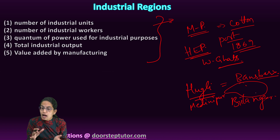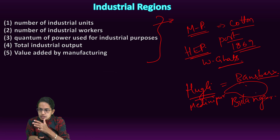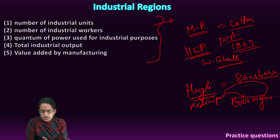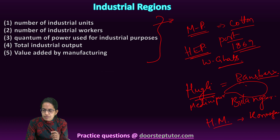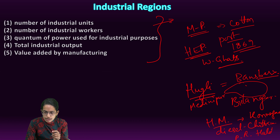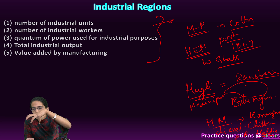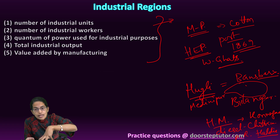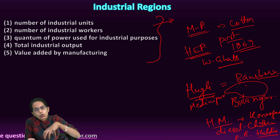This region also had ample opportunity of cheap labor coming from Bihar, Odisha, and Eastern Uttar Pradesh. Factories established here include Hindustan Motors Limited at Konnagar, a diesel locomotive plant at Chittaranjan, and a petroleum refinery at Haldia. The nearby centers of Kolkata, Haldia, Serampore, Rishra, Bansbaria, Hugli, and Belur all developed because of the Hugli industrial region.